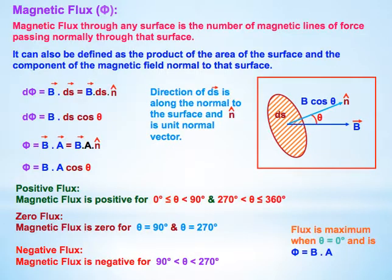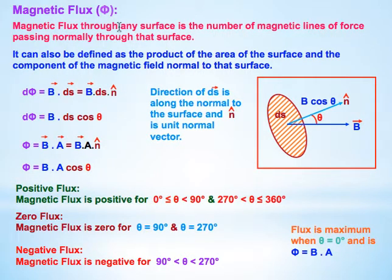Next is Magnetic Flux. What is Magnetic Flux? Magnetic flux through any surface is the number of magnetic lines of force passing normally through that surface.